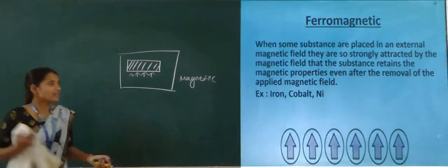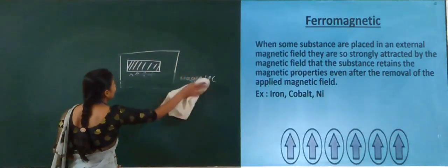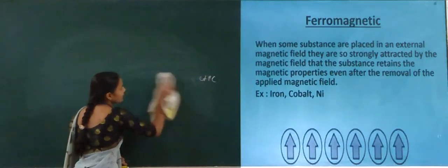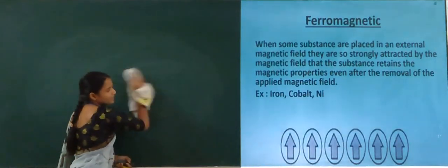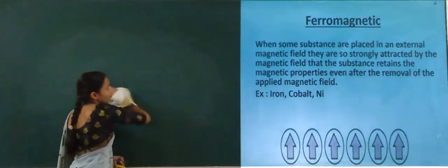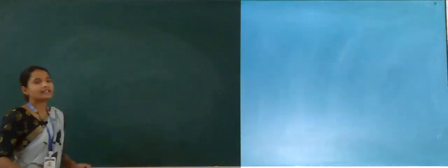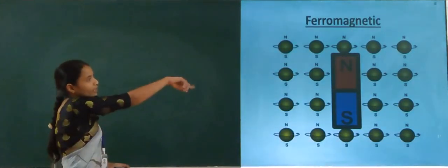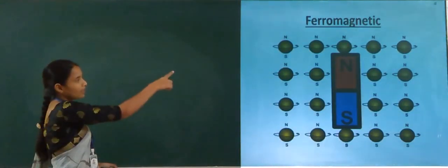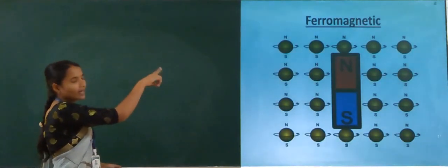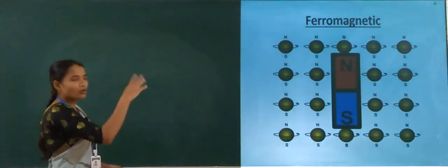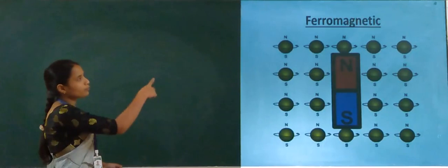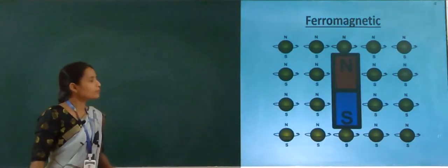In ferromagnetic substances, the spins are all aligned in the same direction. This uniform spin alignment in a single direction produces the ferromagnetic property diagram.